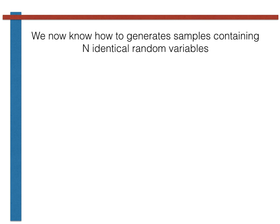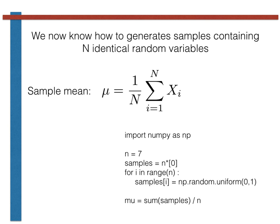We now can easily write a computer program to generate a sample of n identical uniform random variables. Furthermore, once we have this set of samples, we can compute a sample mean by using this expression. A Python code that we might use to complete these two tasks is shown at the bottom of the slide here.